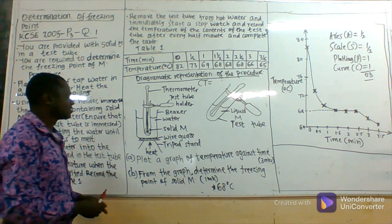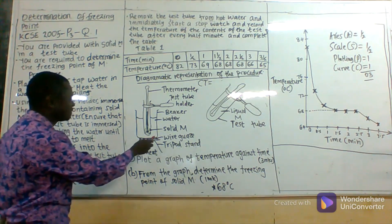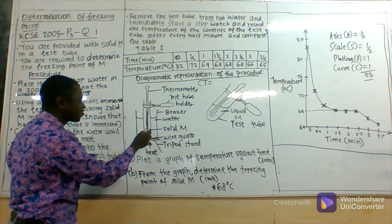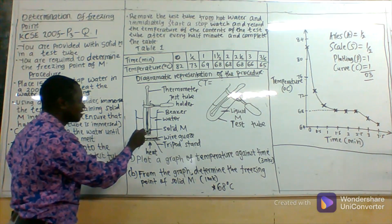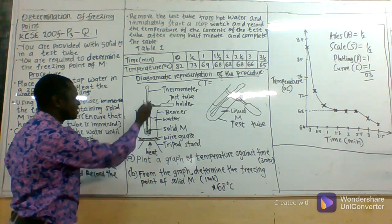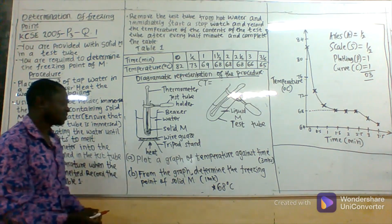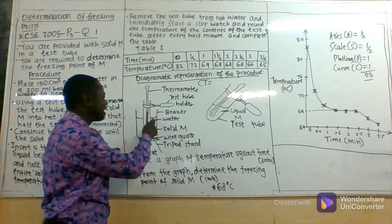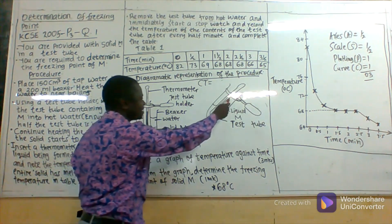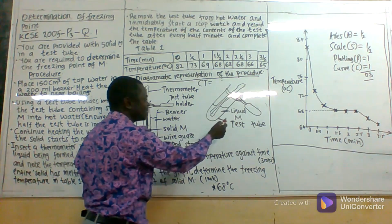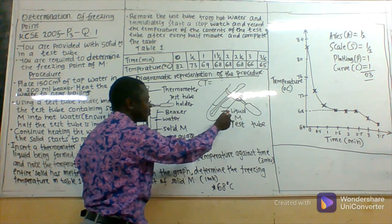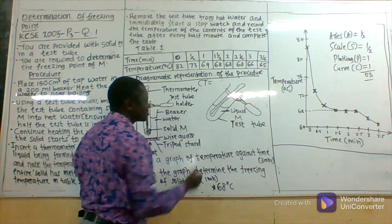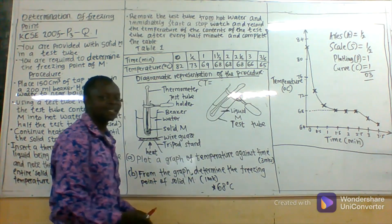The diagrammatic representation of that procedure is: we have water in a beaker that is being heated. There is a test tube containing solid M and a thermometer that has been immersed there. After some time, the test tube has been removed from water and there is a thermometer in that test tube that is now having liquid M. The temperature of liquid M is going to be recorded after every half a minute.